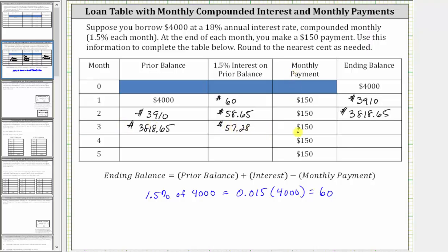Then you make the payment of $150. Therefore the ending balance for month three is 3,818.65 plus 57.28 minus 150, which is equal to $3,725.93.